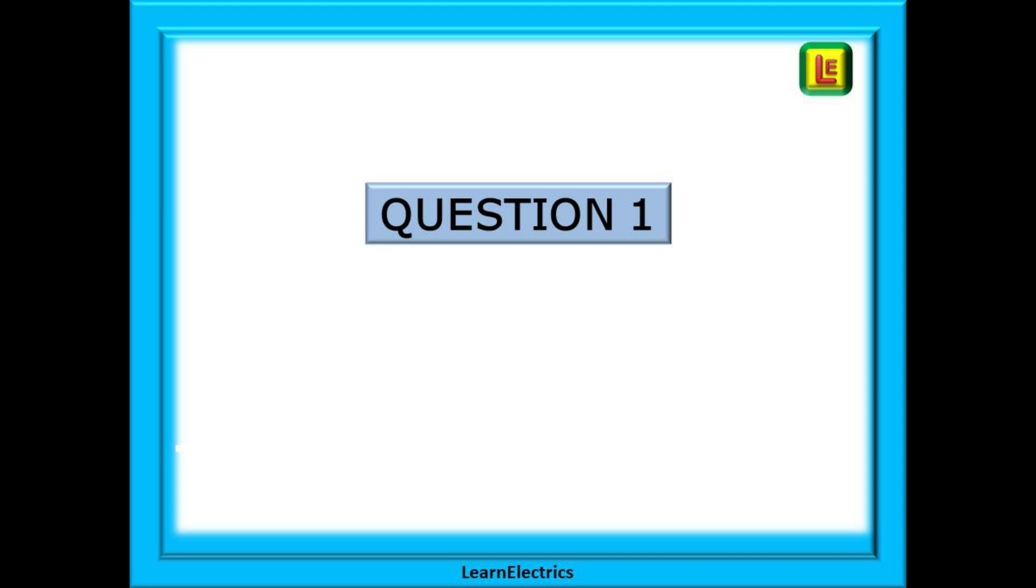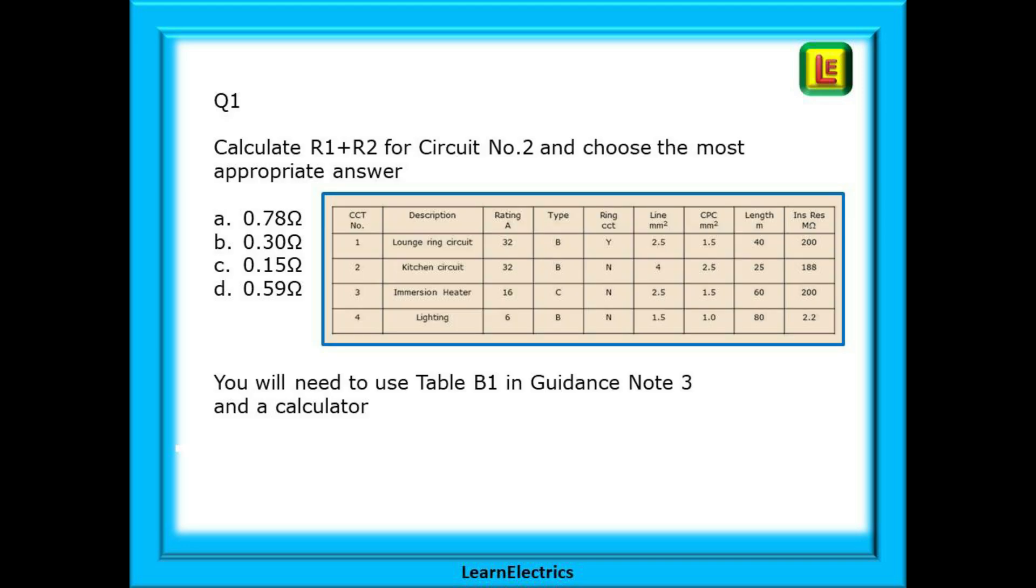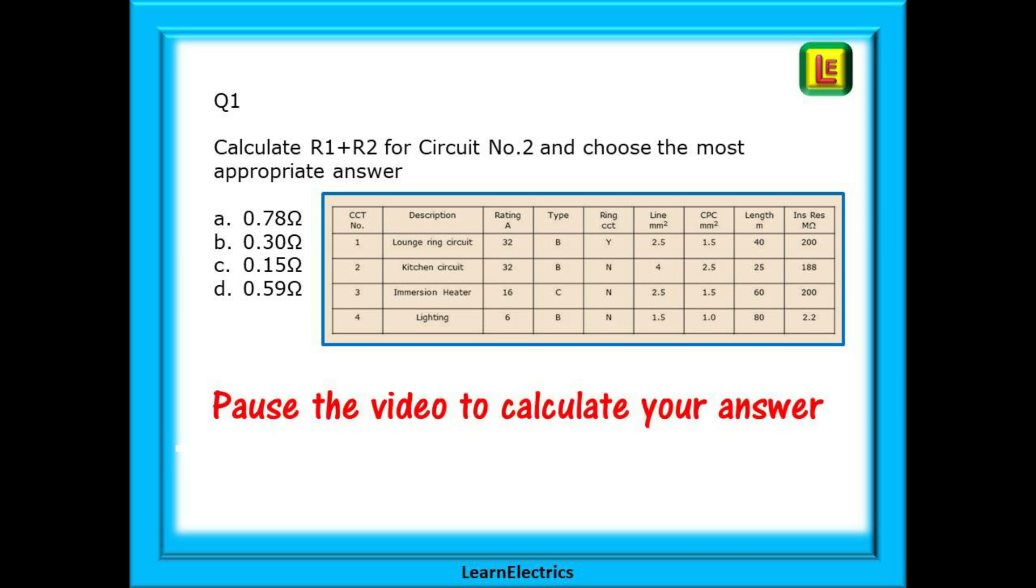Let's begin with question 1. Calculate R1 plus R2 for circuit number 2 and choose the most appropriate answer from the four choices. The test results table is shown along with the question. Pause the video while you calculate your answer and make your choice before moving on.